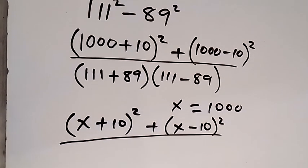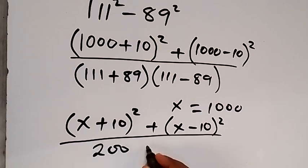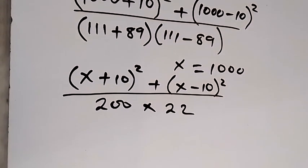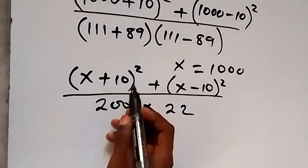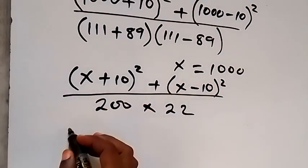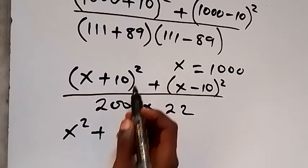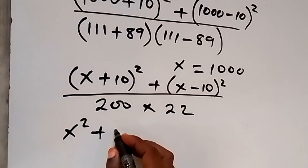Then all divided by here when we add this together, 111 plus 89 will give us 200, then multiply by 111 minus 89, that's 22.